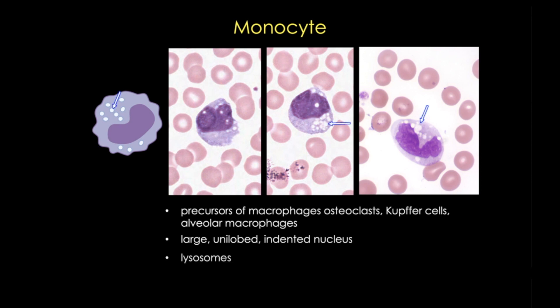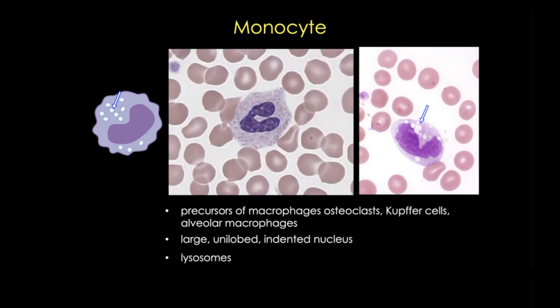Monocyte cytoplasm contains many lysosomes, which are usually white but can sometimes be a very pale blue — they sometimes look like bubbles and can be mistaken for granules, but they are usually larger and much whiter. Remember that lysosomes and granules both contain enzymes that allow neutrophils and monocytes to perform the respiratory burst. Sometimes people confuse monocytes with band-form neutrophils, but band-form neutrophils are typically thinner, with neutrophilic granules that are bluer or more purple and smaller than lysosomes. Also remember that monocytes are typically the biggest white blood cells.